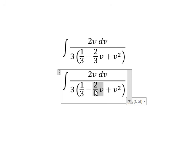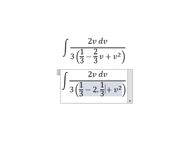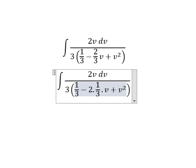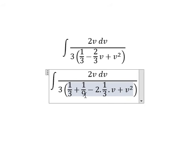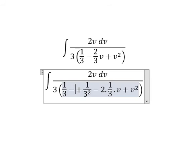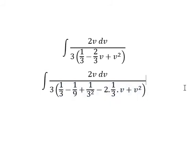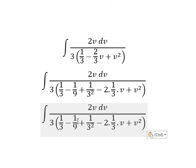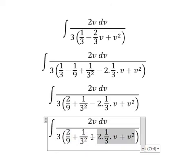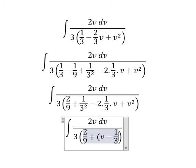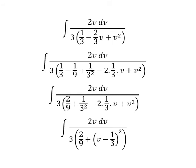So we have 2 over 3 with v — that is 2 multiplied by 1 over 3 and v. We need to have 1 over 9, that is 3 squared, and then we subtract 1 over 9, giving us 2 over 9. So this expression becomes v minus 1 over 3, all squared, which we can now integrate using trigonometric substitution.